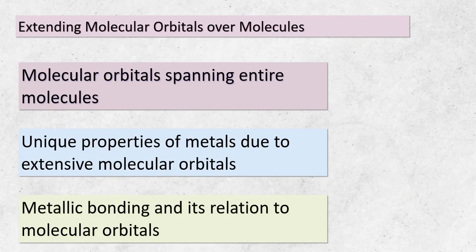As we explore the wonders of molecular orbital theory, let's zoom in on a specific phenomenon: the extension of molecular orbitals across entire molecules. This extension is particularly significant when it comes to metals. The unique ability of molecular orbitals to stretch out and envelop the entire molecule gives rise to intriguing bonding properties in metals — this phenomenon is at the heart of what we call metallic bonding. Picture it as if the electrons within these extended orbitals are shared across a sea of metal atoms, creating a cohesive structure with remarkable properties. It's these properties that make metals good conductors of electricity and heat. The way molecular orbitals spread their influence plays a pivotal role in the fascinating world of metallic bonding.